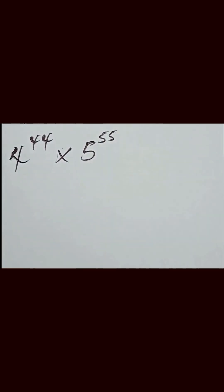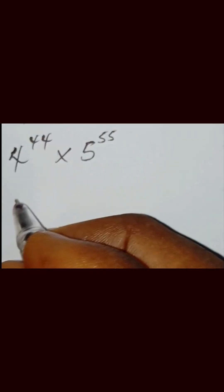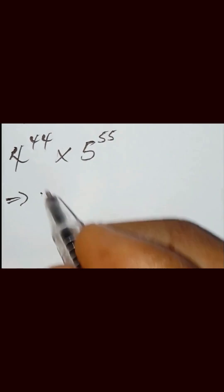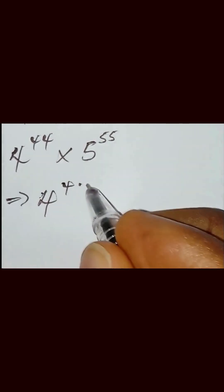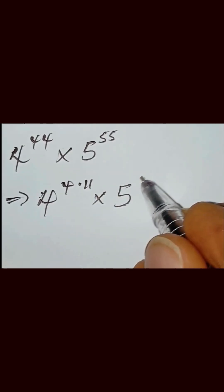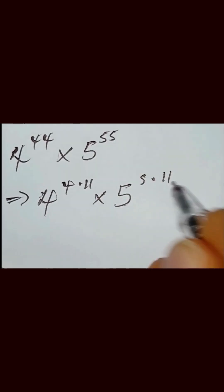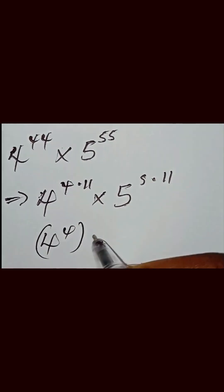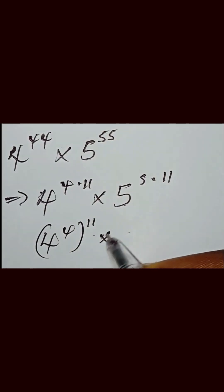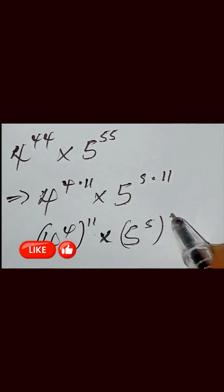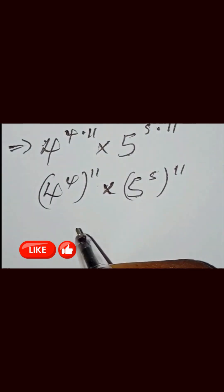To simplify this, we can write this as 4 raised to the power of 4 multiplied by 11, then we have 5 raised to the power of 5 multiplied by 11. So this can be written as 4 raised to the power of 4, into bracket raised to the power of 11, multiplied by 5 raised to the power of 5, into bracket raised to the power of 11.